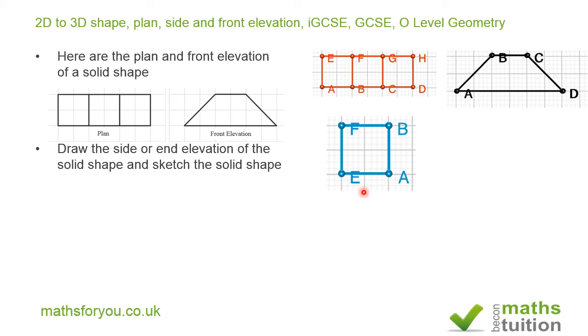We can see that we've got a square — BF by BA. So that would be our side or end elevation.